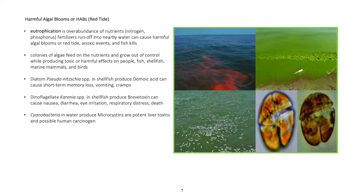Harmful algal blooms (HABs), commonly known as red tide, result from eutrophication — the overabundance of nutrients such as nitrogen and phosphorus. Fertilizer runoff into nearby water can cause harmful algal blooms or red tide, resulting in anoxic events and fish kills. Colonies of algae feed on the nutrients and grow out of control while producing toxic or harmful effects on people, fish, shellfish, marine mammals, and birds.